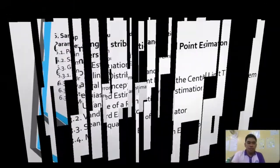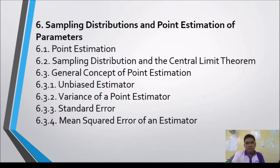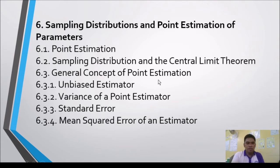The sixth topic is Sampling Distributions and Point Estimation of Parameters, with three lessons: point estimation, sampling distributions and the Central Limit Theorem, and the general concept of point estimation — which has four sub-lessons covering unbiased estimators, variance of a point estimator, standard error, and mean squared error of an estimator.